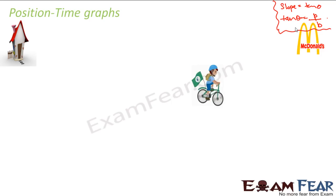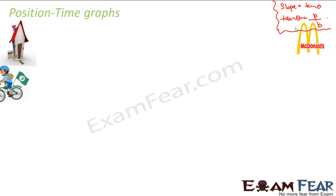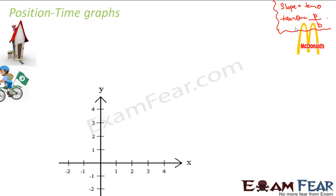Let us take the same example: the boy starts from his home, goes to McDonald's, and then comes back. In a distance-time graph, the plot was a straight line because distance is independent of direction. But in the position-time graph, direction also plays a role. The graph will look somewhat different — with position on the y-axis and time on the x-axis.